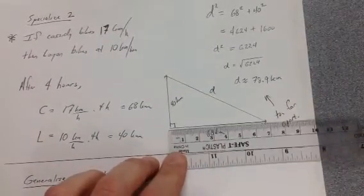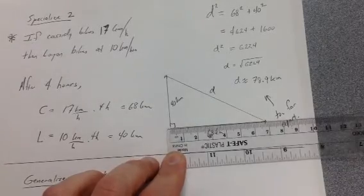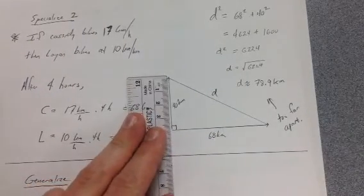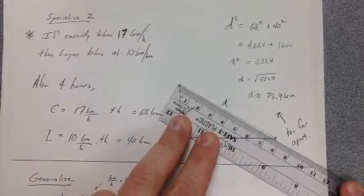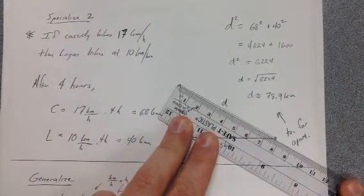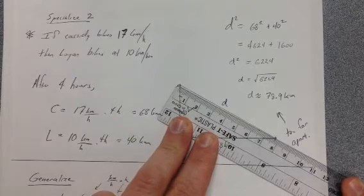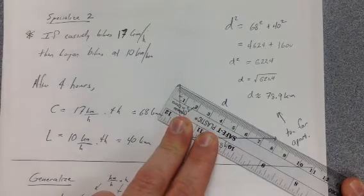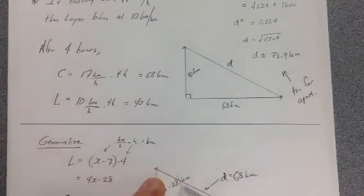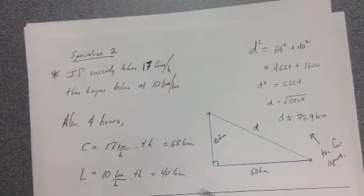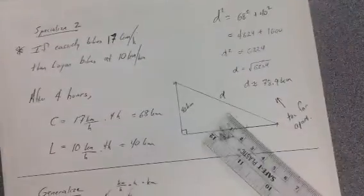Notice, by the way, this is 6.8 or representing 68 kilometers. This is 4 representing 4 kilometers. And if I measure their distance, that appears to be in the ballpark of 7.89, something like that. So I know I'm on the right track here and trying to understand the relationship between the speed and the distance traveled. I think I'm ready to generalize this.